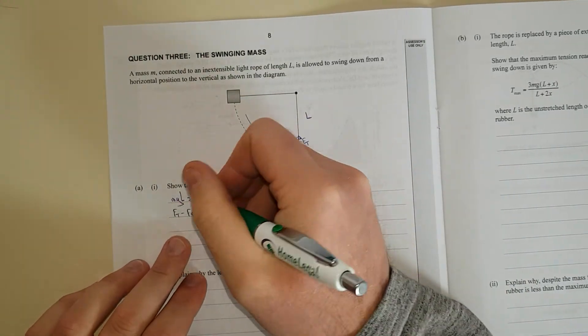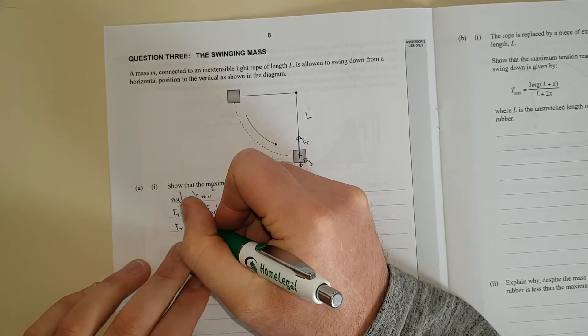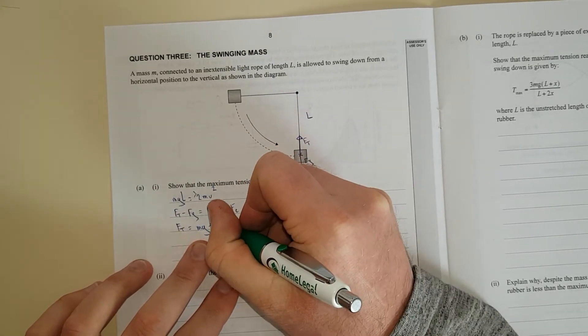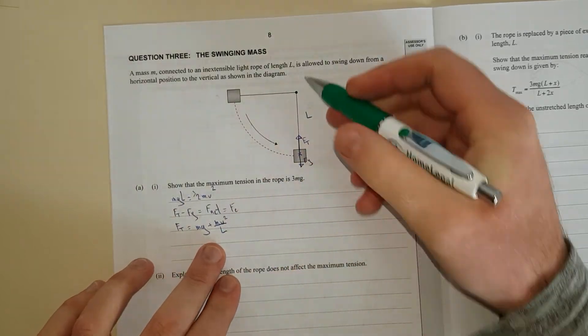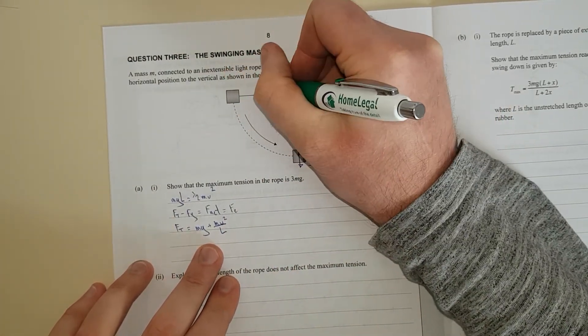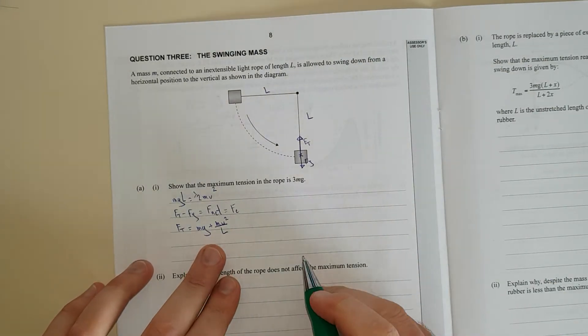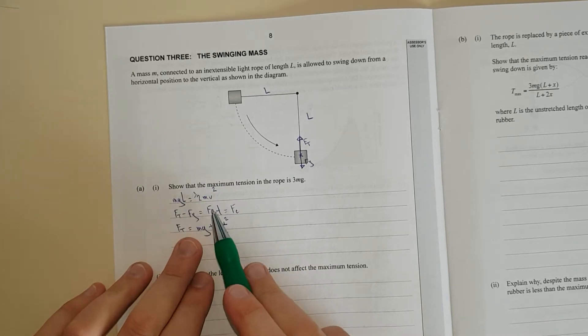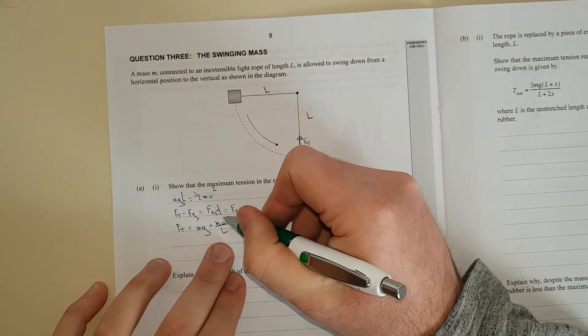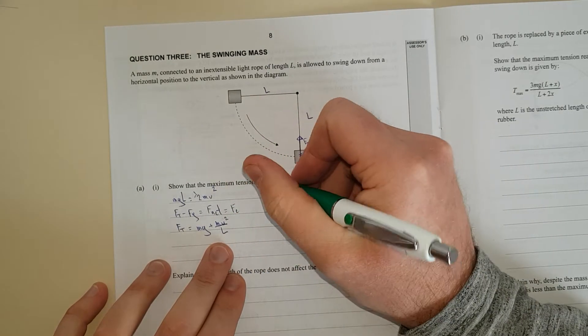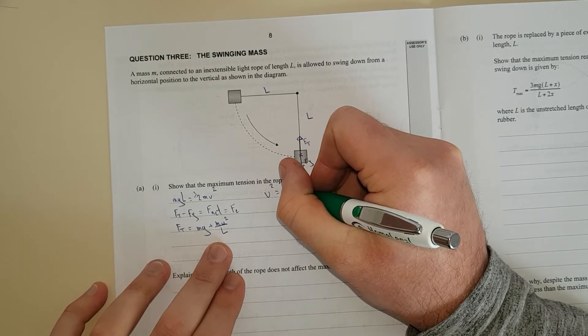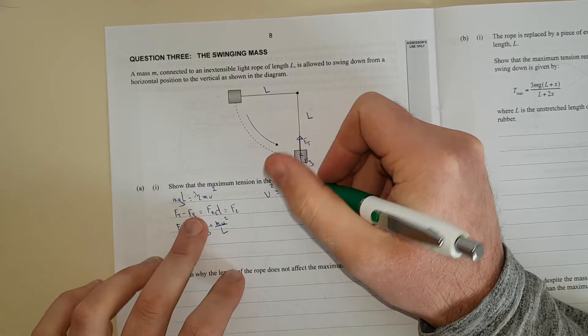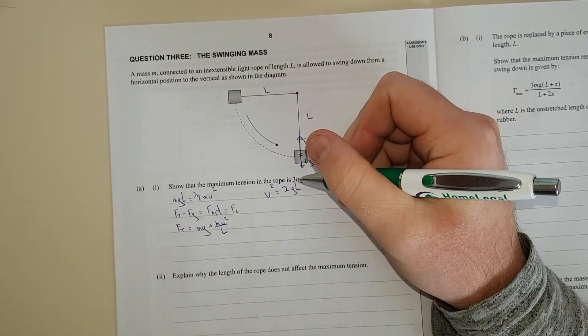So we can write Ft minus Fg equals Fnet, which is the center pointing force Fc. In other words, if we rearrange this, we get Ft is equal to mass times gravity plus mv squared over L, because essentially it's R. This is the radius, but it is L because it's the toss like that there.